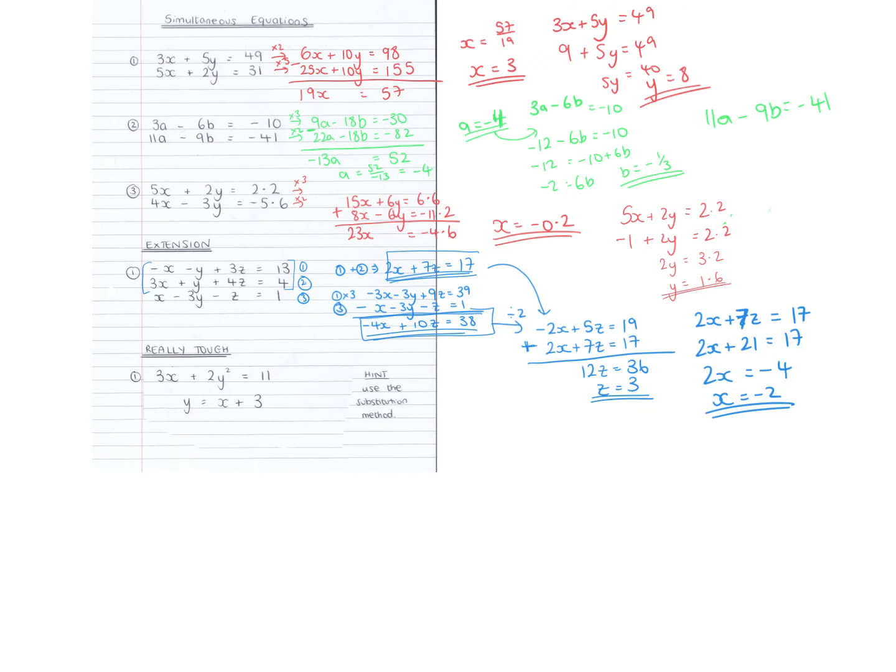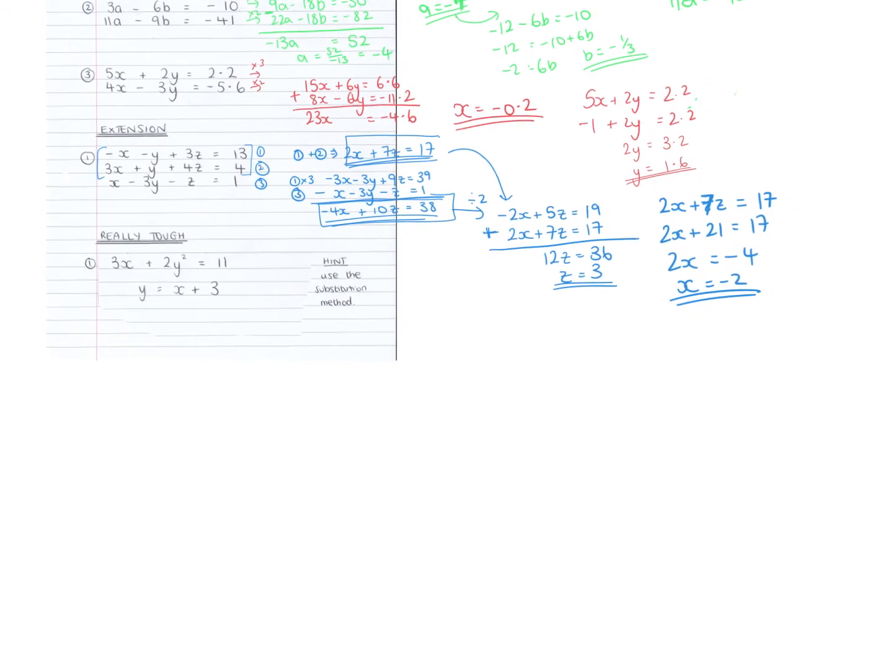And then I need to just go back up into one of the equations at the top to get y. So if I choose the equation 3x plus y plus 4z equals 4, if x is minus 2, 3x is going to be minus 6. Plus y plus 4z. If z is 3, that would be 12. 12 minus 6 is 6, plus y equals 4. Y equals minus 2.